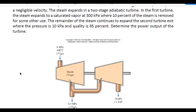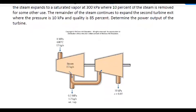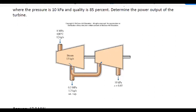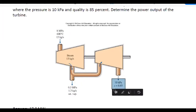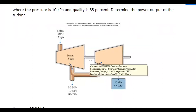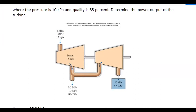We need to determine the power output of this combined turbine, which will be the output of the first turbine plus the output of the second turbine. We have an initial high-energy state, then after the first turbine we have a lower-energy state, and after the second turbine we reach the lowest energy state. We'll solve how much work each turbine produces separately.